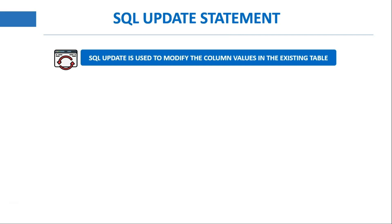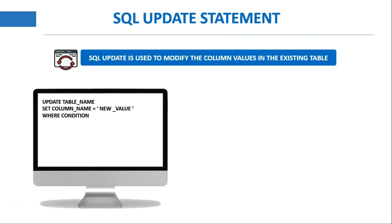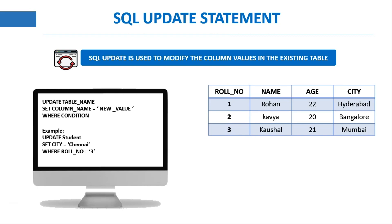Let us understand the syntax of the SQL update statement. The syntax is: UPDATE followed by the table name, then SET column name equals to the new value — that is the value you want to change from the previous value — and after that you mention the condition using WHERE. To understand this in a better way, let us take an example.